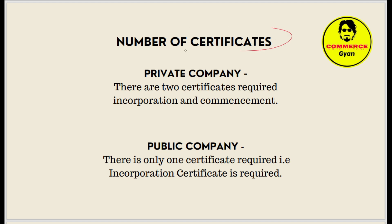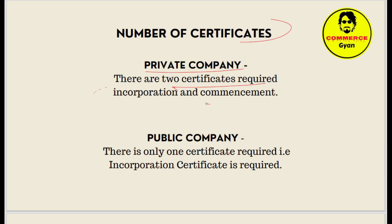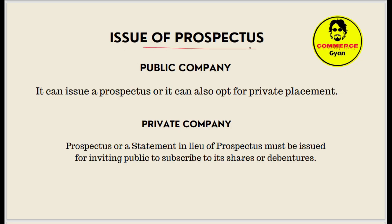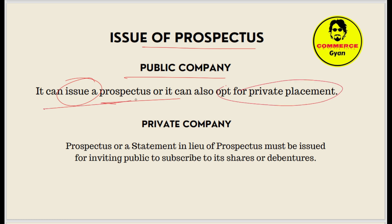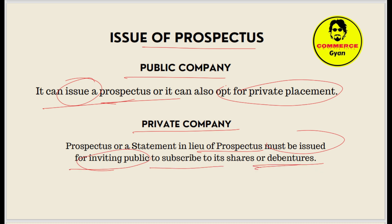Regarding certificates: a private company requires two certificates — the incorporation certificate and the commencement certificate. A public company requires only one certificate — the incorporation certificate. Regarding issue of prospectus: a public company can issue a prospectus or opt for a private placement; a private company must issue a prospectus or statement in lieu of a prospectus when inviting the public to subscribe to its shares or debentures.